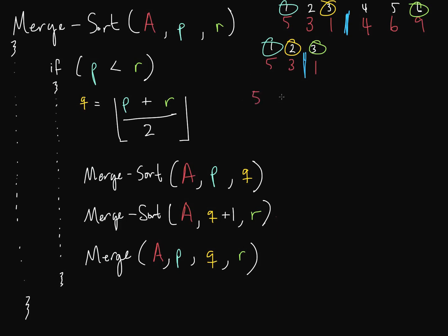We have elements 5 and 3 at indices 1 and 2. P is 1, R is 2. Since 1 is less than 2, we find Q: floor of (1+2)/2 = floor of 1.5 = 1. We divide there, leaving element 5 at index 1. Since P equals R (both are 1), there's only one element — it's sorted, so we return.